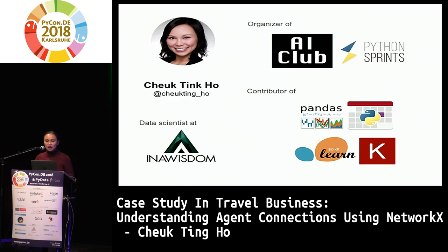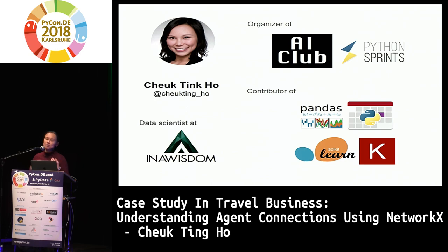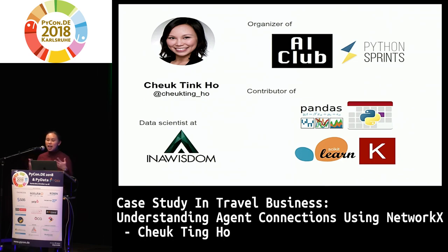First of all, I'd like to introduce myself. I'm Chuck — that's my Twitter handle, you can find me there. I'm from London, and I'm also an organizer of the AI Club for Gender Minority, which is a meetup focusing on minorities in the IT industry: being a group, supporting each other, and doing fun things together. We will have a general club meeting very soon. We'll also have private sprints where we contribute to open source together. This is for everyone — everyone can join our sprint. I'm sure this Saturday and Sunday there'll be sprints here at the conference. If you haven't contributed to open source, I highly recommend you join. You'll love it — you'll be addicted.